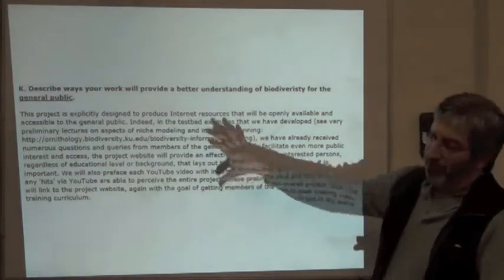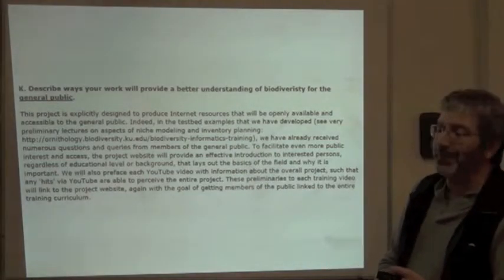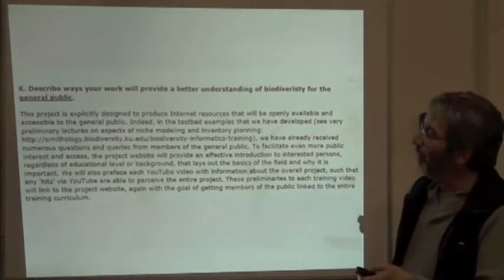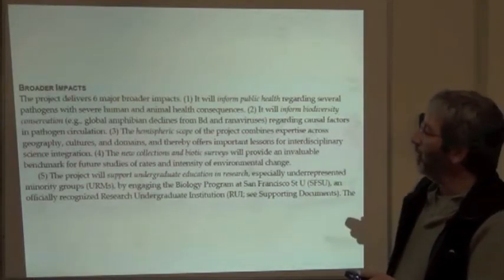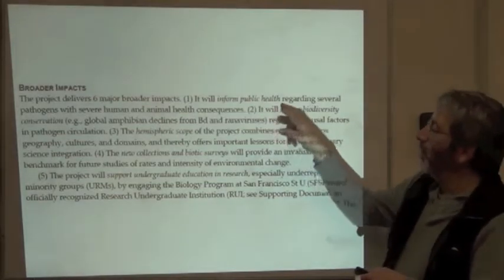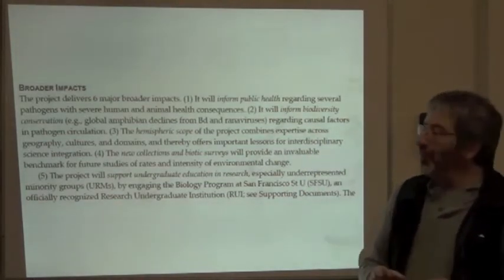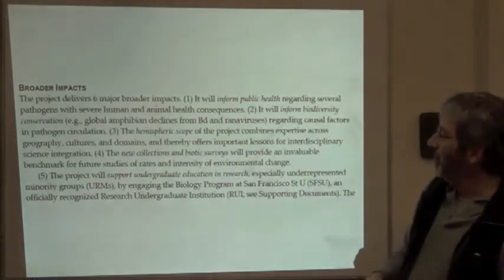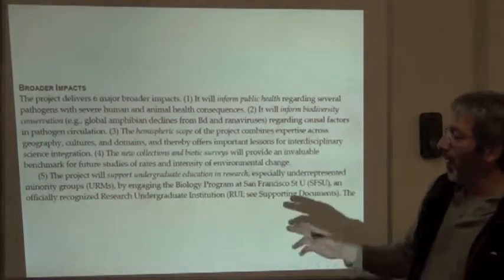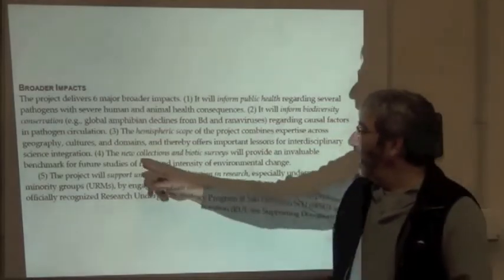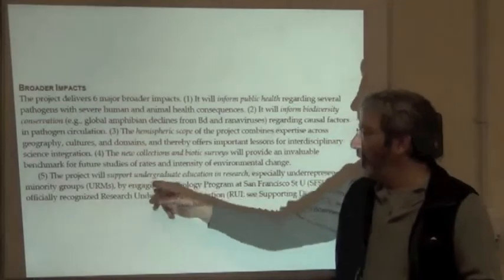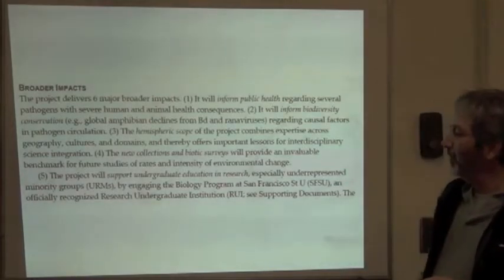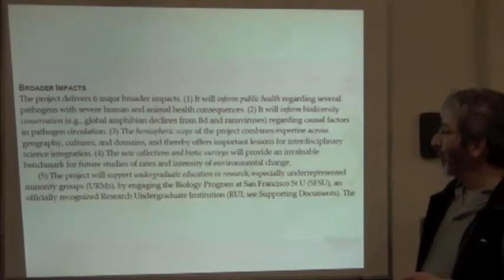Here are some examples. For the JRS proposal it was easy: we're making teaching resources available worldwide. For the National Science Foundation project, it was a very nice one because it had direct public health implications even though it was a biodiversity proposal. It also informed biodiversity conservation, combined expertise across many countries, cultures, and domains, developed new biological collections, and supported undergraduate education and research — requiring a long and detailed description of all these different benefits.